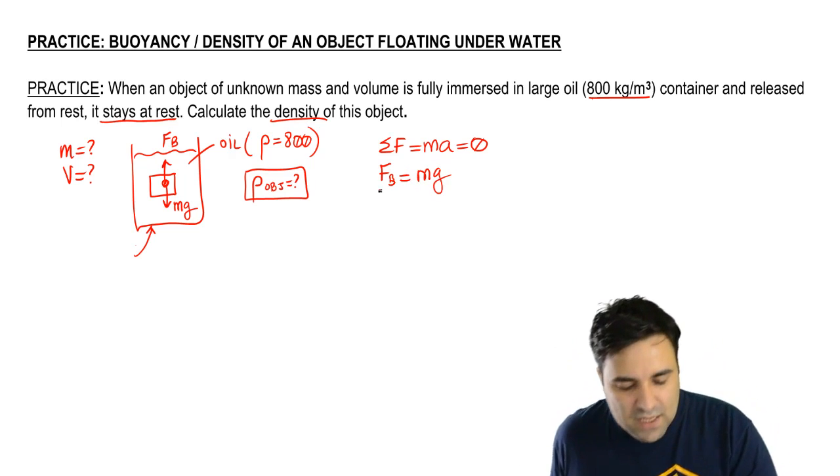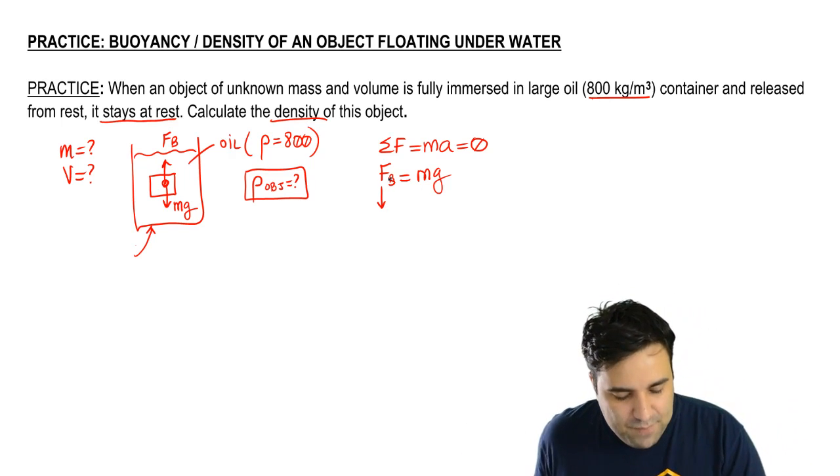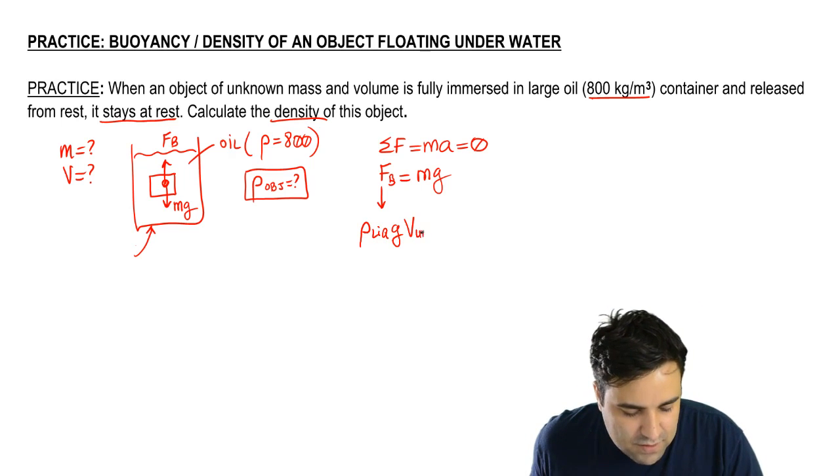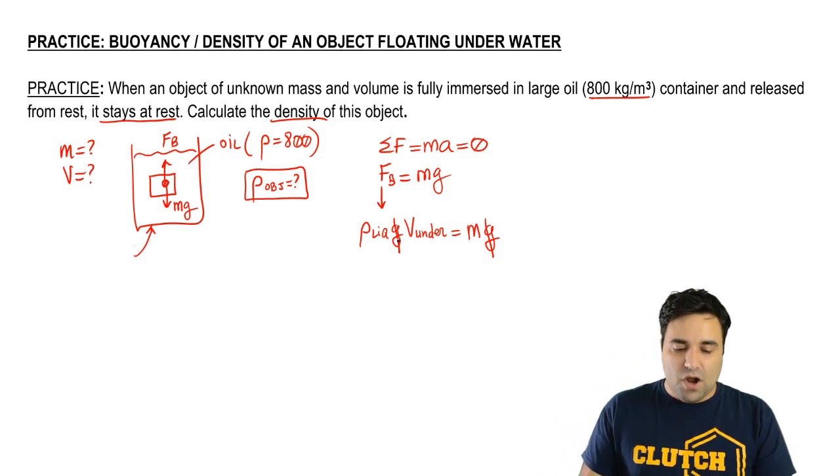Now, the next step is always going to be to expand FB, to rewrite FB. And FB is the density of the liquid times gravity times the volume of the object that is under the liquid. And that's going to equal mass of the object and G. The G's cancel. That's going to happen a lot, but not always.